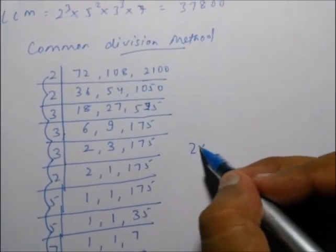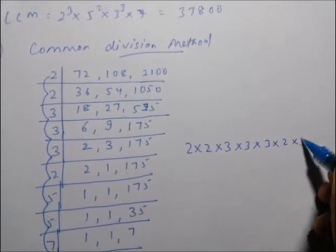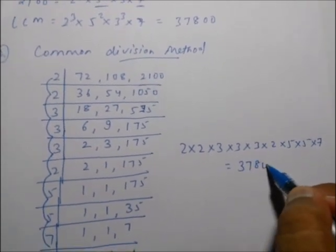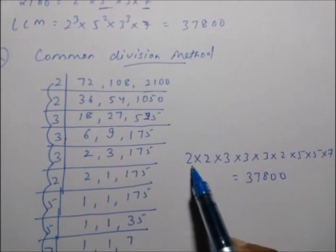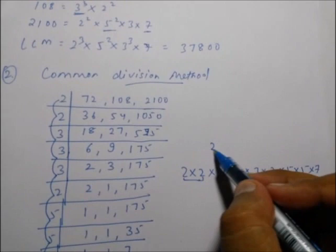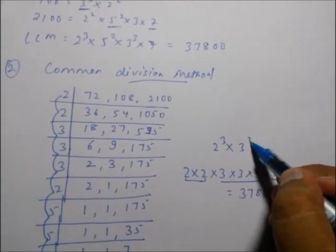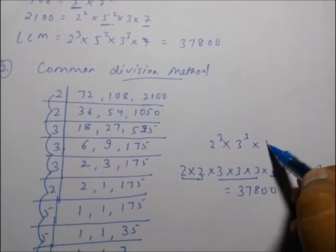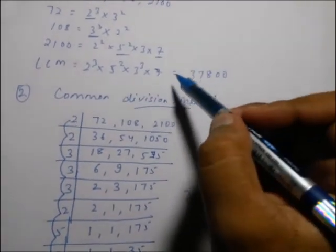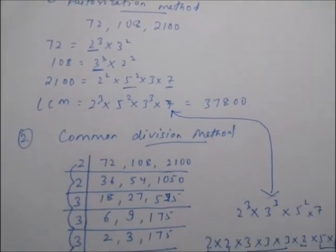Multiplying 2 × 2 × 3 × 3 × 3 × 2 × 5 × 5 × 7, the answer is 37,800. Looking at this, we get 2 raised to the power 3, 3 raised to the power 3, 5 raised to the power 2, and 7 — which is exactly the same result as in the factorization method.